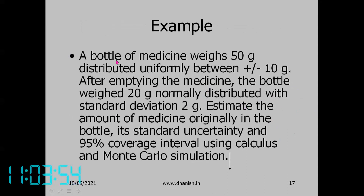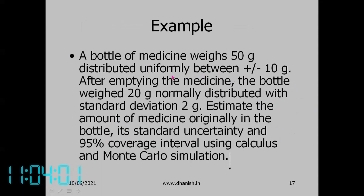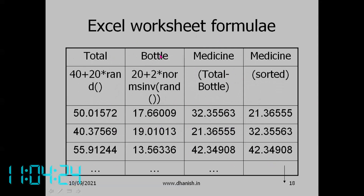Consider a problem: a bottle of medicine weighs 50 grams, distributed uniformly between plus or minus 10 grams. After emptying the medicine, the bottle weighed 20 grams, normally distributed with standard deviation 2 grams. Estimate the amount of medicine originally in the bottle, its standard uncertainty, and 95% coverage interval using both calculus and Monte Carlo simulation.